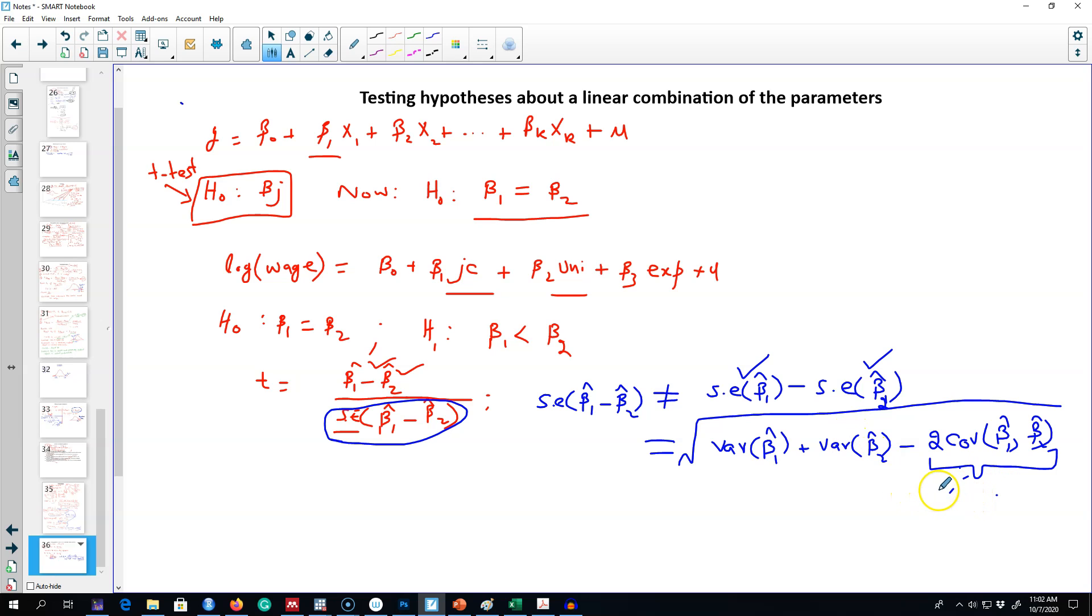In the next video, I'm going to talk about a way around this issue so that we don't have to manually calculate covariance between beta_1 and beta_2. We're going to manipulate this equation a little bit so that we will be able to get our desired coefficient values and test hypotheses about those coefficient values. I'll see you in the next video.